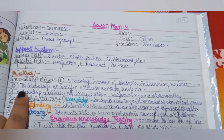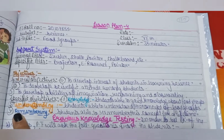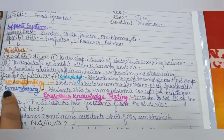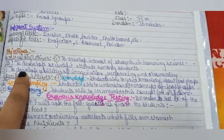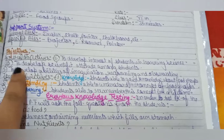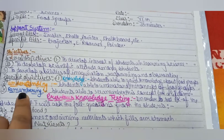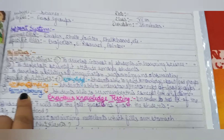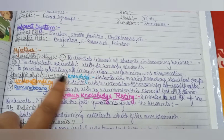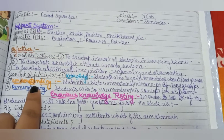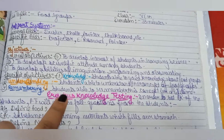In objectives, there will be general and specific objectives. The general objective covers how to teach children, what to teach kids, how to gain knowledge, understand, and remember.